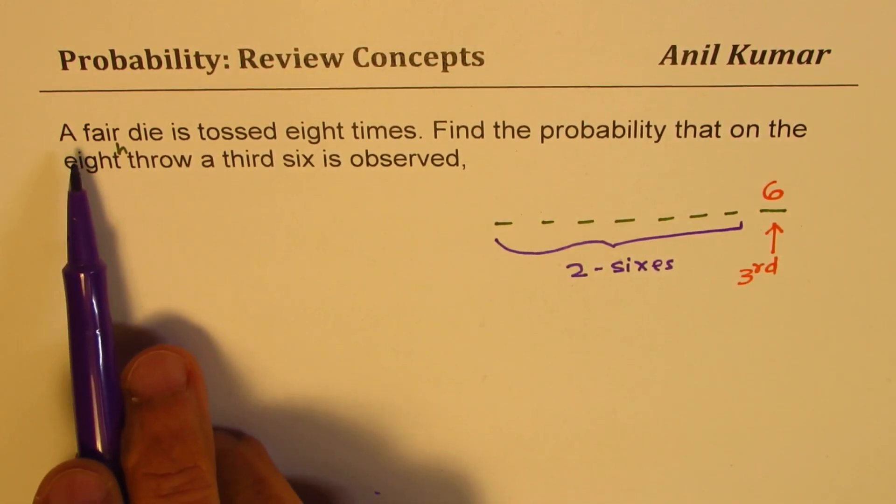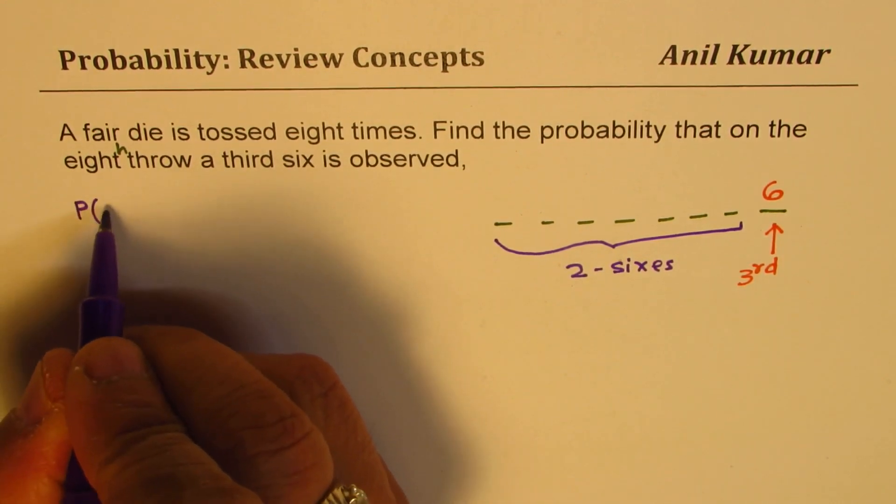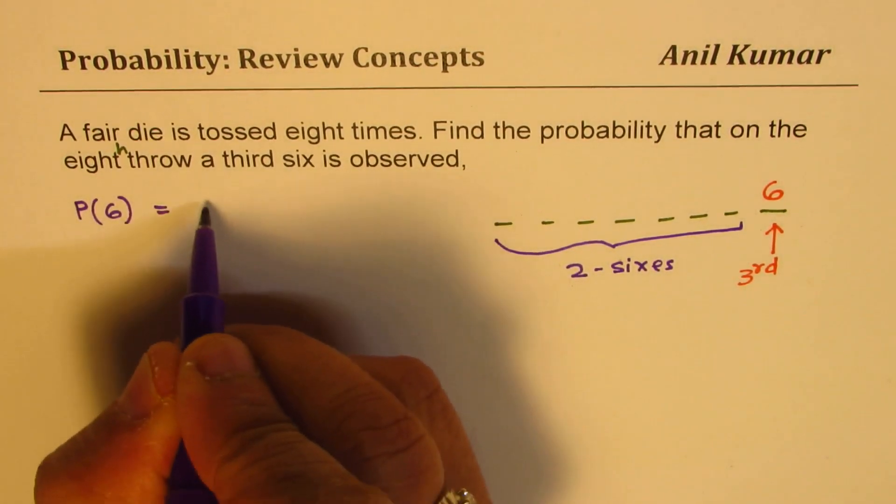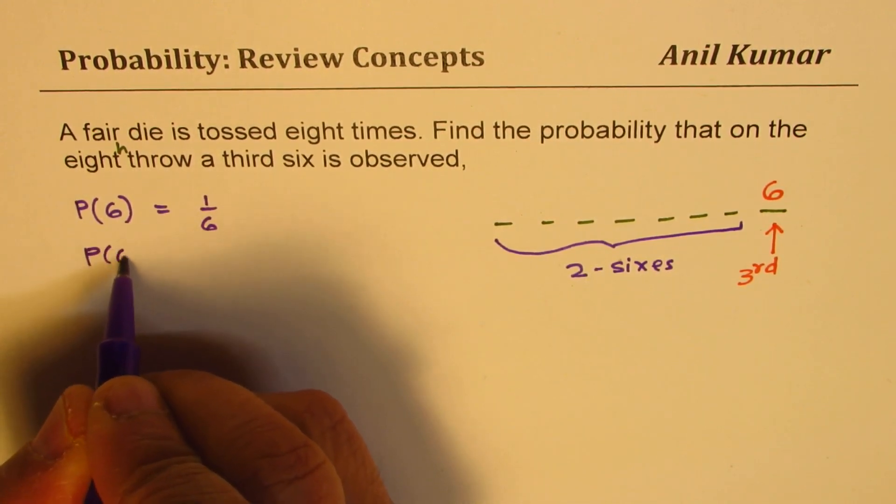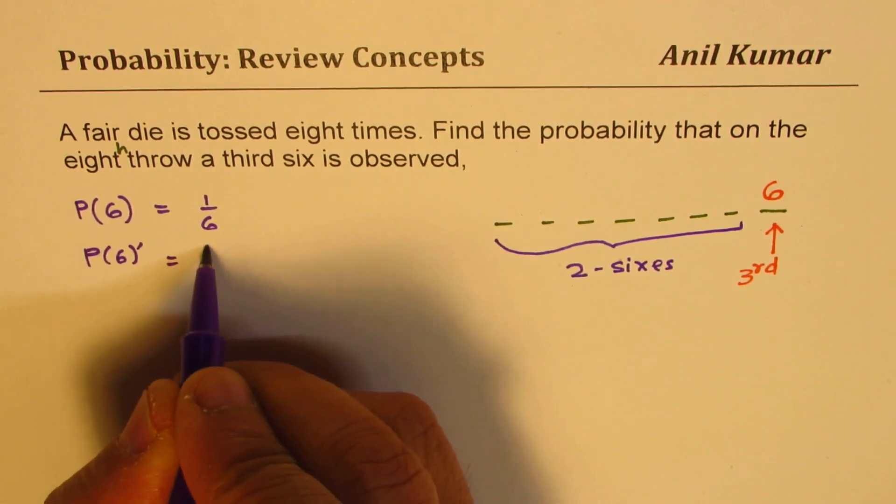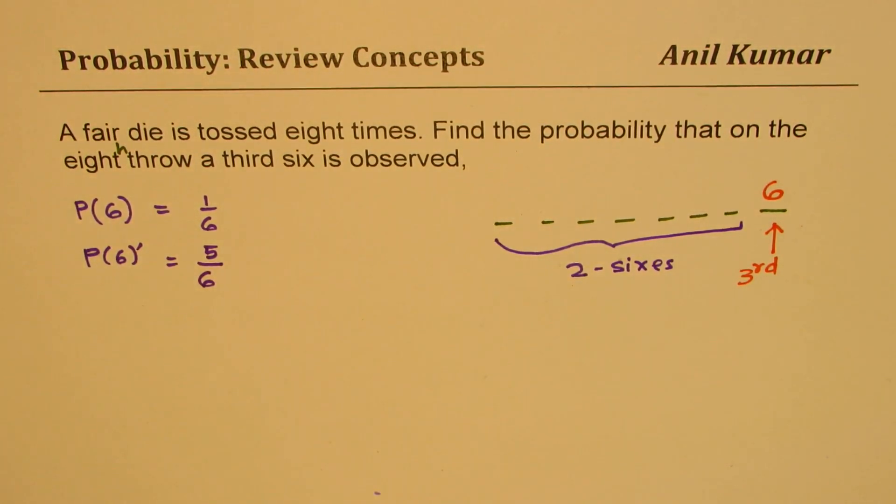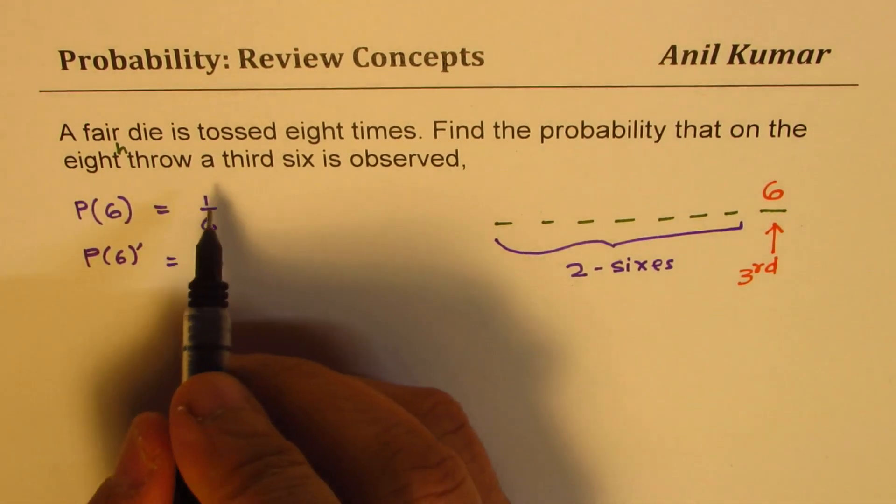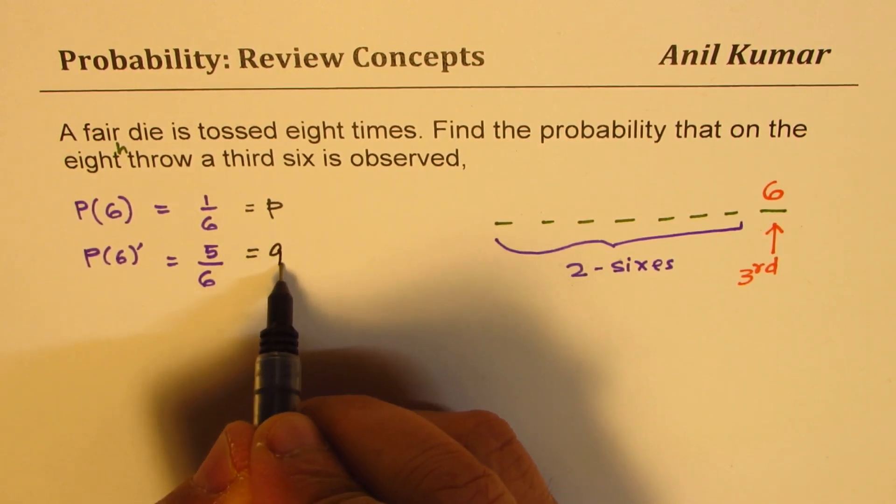Now since we have a very fair die, it really means that probability of getting a six is one out of six, P equals 1/6. And probability of not getting a six is five out of six. And this probability is not going to change during our experiment. So we can say that the success here is P and the probability for failure is Q.